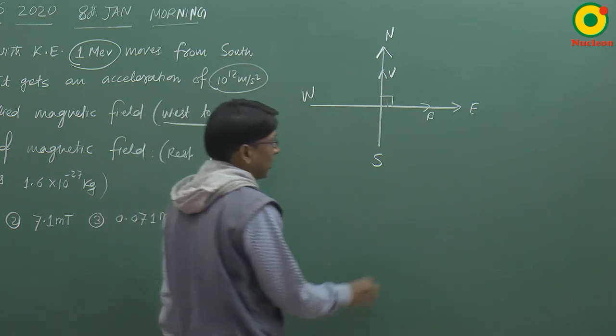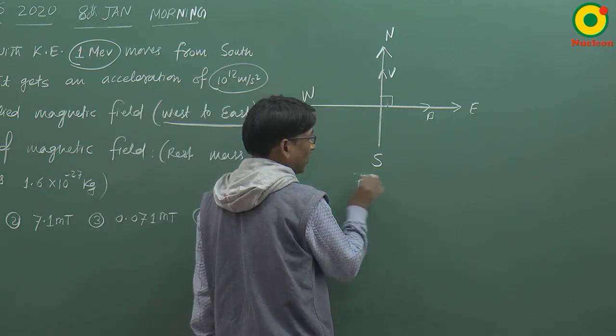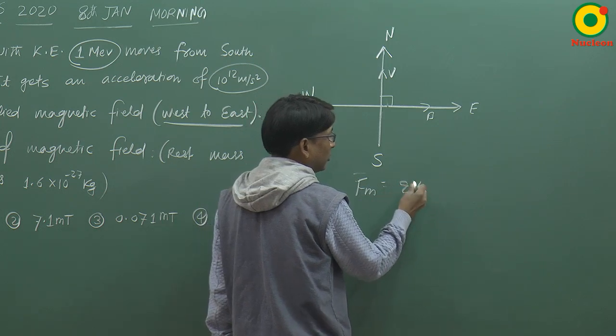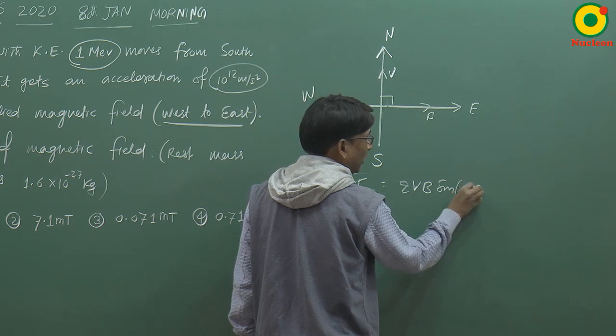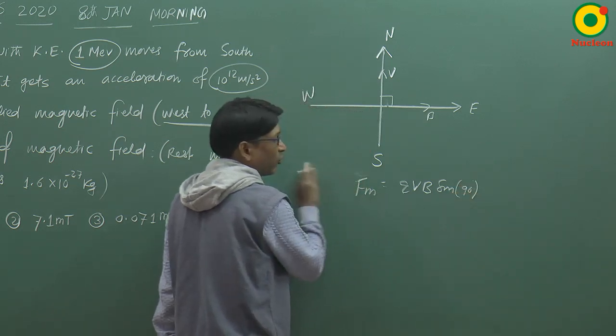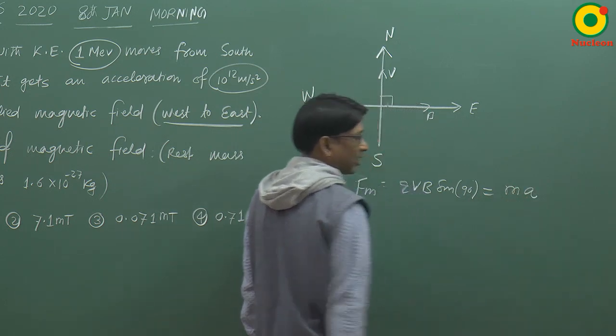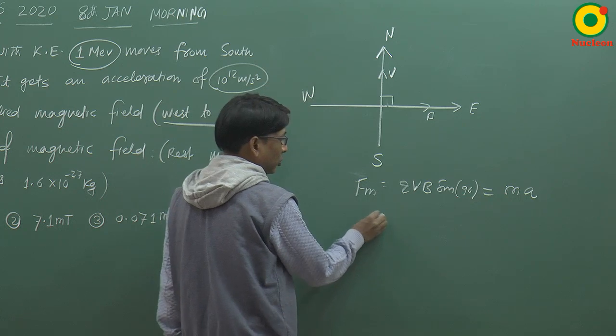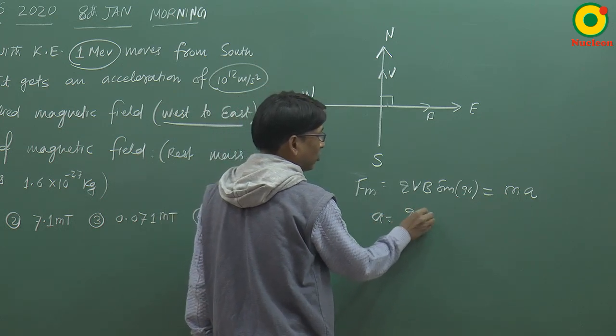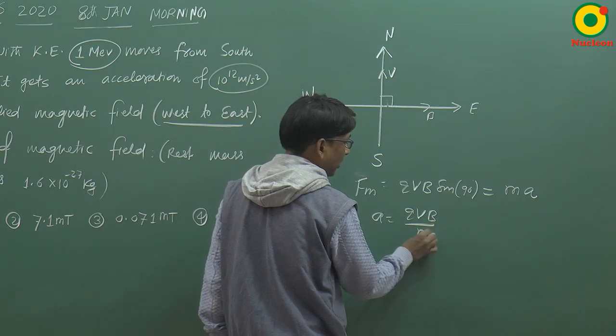Toh kishi bhi charge particle par joh magnetic force lagta hai, uus ko hum likhte hai qvb, qvb sin theta likhte hai. Yahaan par theta 90 degree hai. Toh ye force lag raha hai. Ishi force ki wajah se proton ke paas acceleration aayega. Toh likhenge mass into acceleration. Toh acceleration aayega qvb divided by m.